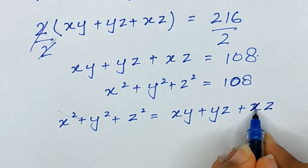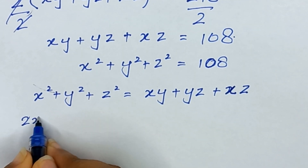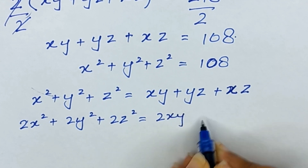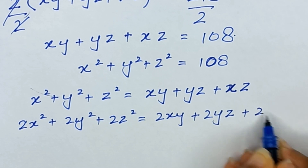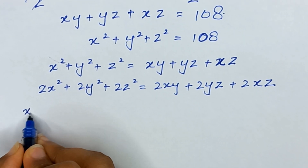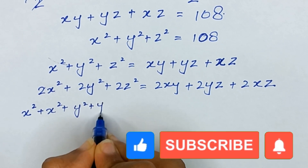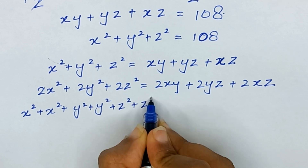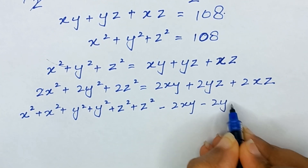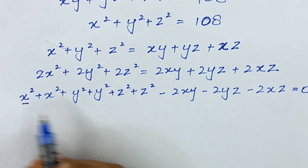To find the values of x, y, and z, I'll multiply the whole equation by 2: 2x² plus 2y² plus 2z² equals 2xy plus 2yz plus 2xz. Rearranging, I write 2x² as x² plus x², and similarly for y² and z², then bring the right-hand side over: minus 2xy minus 2yz minus 2xz, all equal to zero.